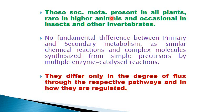These secondary metabolites are present in all plants, rare in higher animals, and occasional in insects and other invertebrates. If we look at the difference between primary and secondary metabolites, there are no fundamental differences between secondary and primary metabolism. Similar chemical reactions take place in both cases — complex molecules are synthesized from simple precursors by multiple enzyme-catalyzed reactions. Primary and secondary metabolites differ only in the degree of flux through the respective pathways and in how they are regulated.